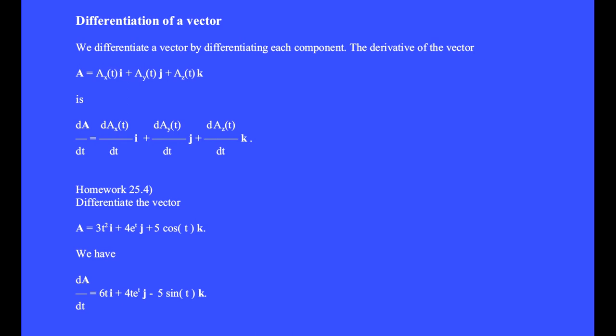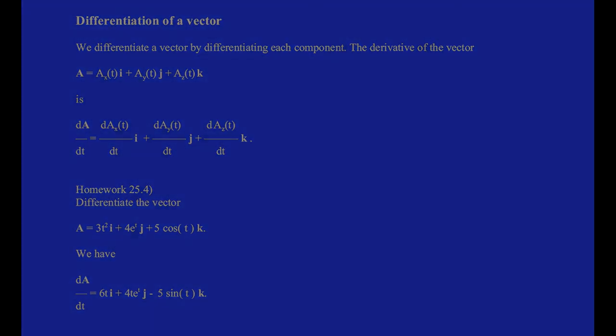In problem 2.4, let's differentiate the vector a equal 3t squared i hat plus 4e to the t j hat plus 5 cosine t k hat. We have the time derivative of vector a is 6ti hat plus 4e to the t j hat minus 5 sine of t k hat.